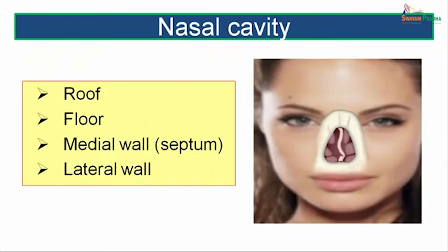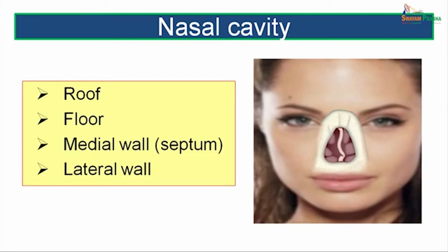The nasal cavity is made up of a roof, a floor, a medial wall which is the nasal septum, and the lateral wall. The lateral wall is further strengthened by three curved bony projections which are known as the nasal concae or the turbinates.